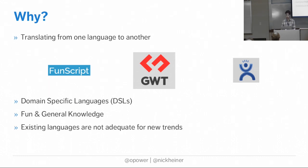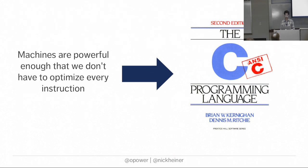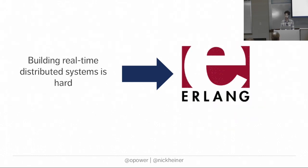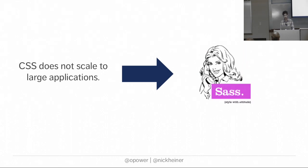The big reason we want to make new languages is that existing languages aren't adequate for new trends, or there are new opportunities existing languages aren't taking advantage of. For instance, C was first developed when machines became powerful enough that we didn't need to optimize everything by hand. When people started wanting to build real-time distributed systems, Erlang was developed because existing languages like C didn't make that easy. CSS was probably originally used to change font and background color on static pages, and now it's used for complicated animations in big web apps - so Sass was developed because CSS lacks the built-in features needed for that.